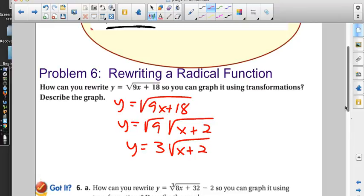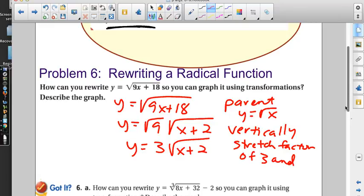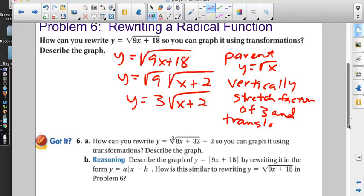And then it says describe the graph. Well, our parent would be y = √x. What they're asking is, what does the 3 do? Vertical stretch factor of 3. And how about that plus 2 in here? That's left 2. That's not new - describing the transformations is something we've been doing ever since the first chapter. So if we can factor that out, we want to do that.